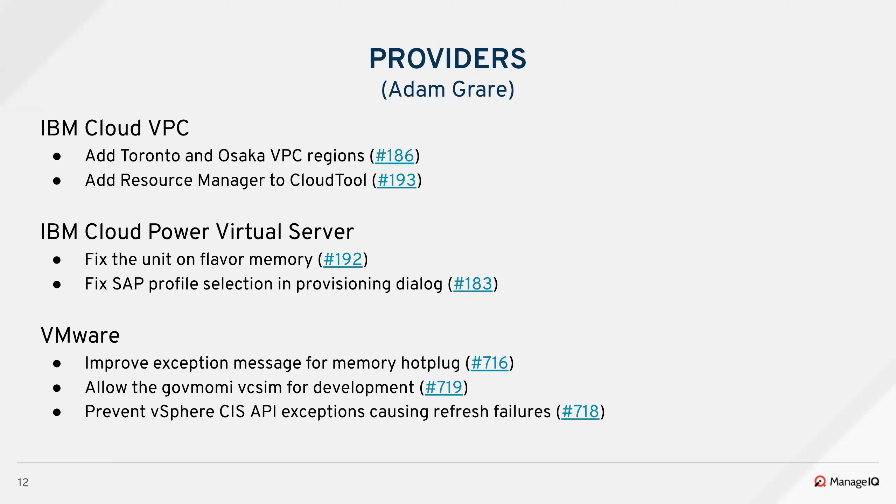For VPC and IBM Cloud, Jared added the Toronto and Osaka VPC regions. He also added the resource manager SDK to his cloud tool so it can be used by the rest of the VPC codebase for power virtual servers. They fixed the flavor memory being saved incorrectly in the wrong units — it was being saved in gigabytes when it should have been in bytes. They also fixed an issue where SAP profile selections were being cached in the dialogue, so even if you were switching around between profiles it would keep the same profile selected first. That bug is now fixed.